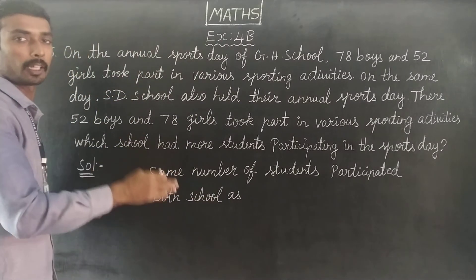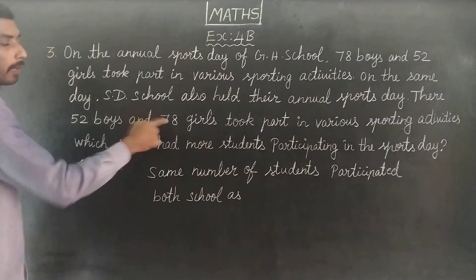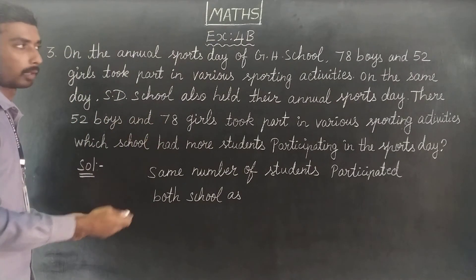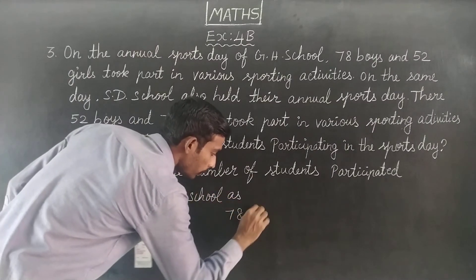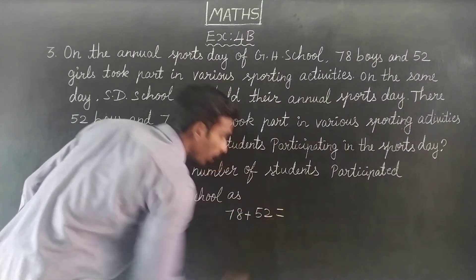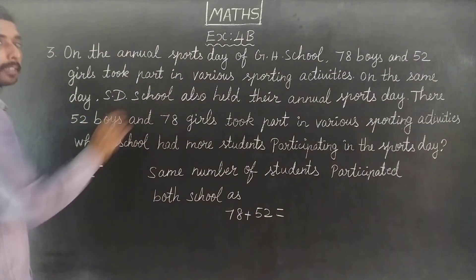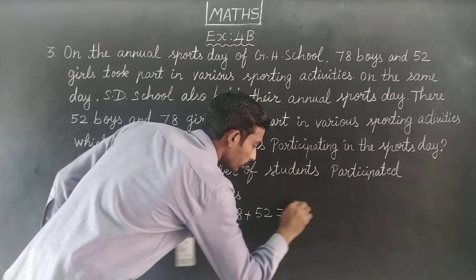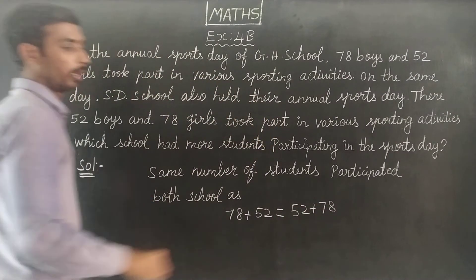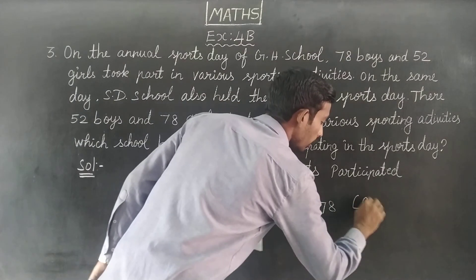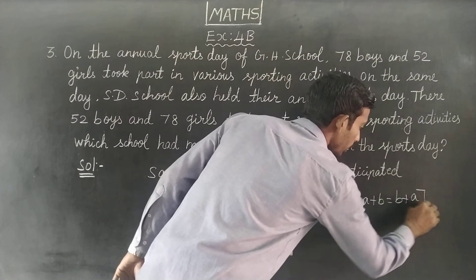Why? Because GH school had 78 boys and 52 girls, and SD school had 52 boys and 78 girls. So: 78 plus 52 equals 52 plus 78. This is the commutative property: A plus B equals B plus A.